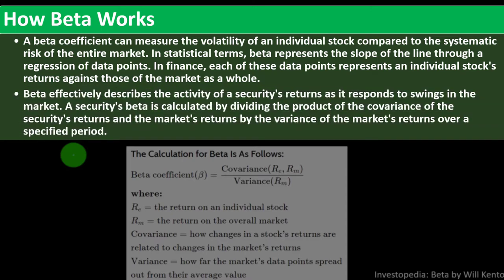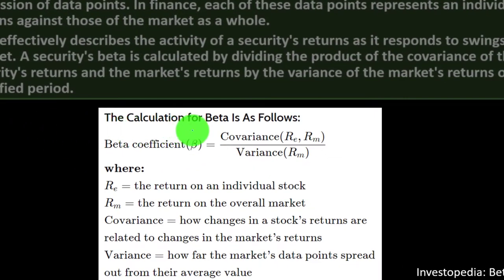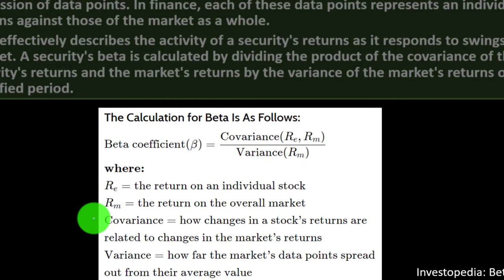Beta effectively describes the activity of a security's returns as it responds to swings in the market. A security's beta is calculated by dividing the covariance of the security's returns and the market's returns by the variance of the market's returns over a specified period. So: Beta = Covariance(Re, Rm) / Variance(Rm), where Re is the return on an individual stock and Rm is the return on the overall market.